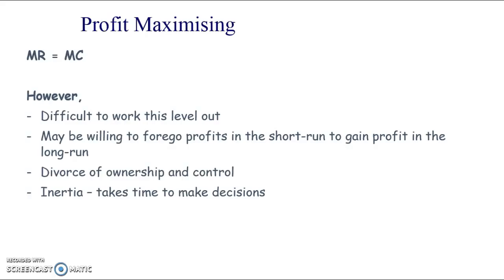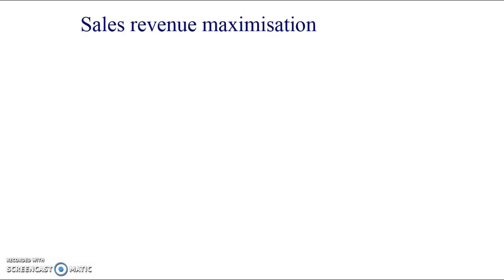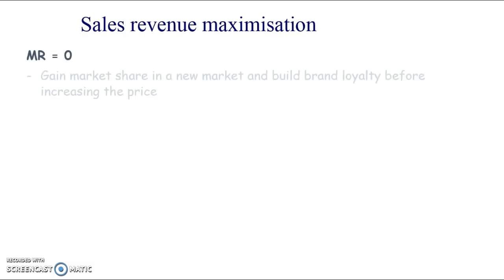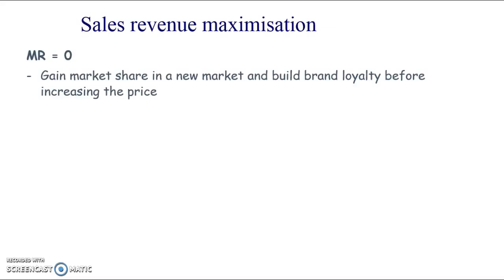There can also be price inertia. Whenever variable costs change — affecting marginal costs — or whenever average revenue changes — affecting marginal revenue — the profit-maximizing output should theoretically change. But prices don't adjust as often as they should, because decision-making takes time and changing prices involves costs, so it may be more cost-effective not to change prices every day or every hour.